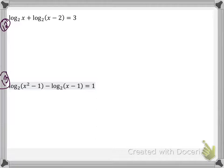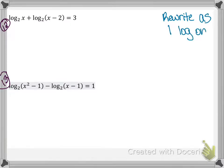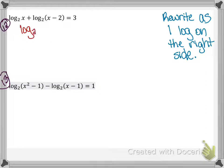Next: log base 2 of x + log base 2 of (x - 2) = 3. We want to rewrite as one log on one side, so log base 2 of [x(x - 2)] = 3. Now this is similar to our first case — one log on one side — so we rewrite as an exponent: 2³ = x(x - 2).